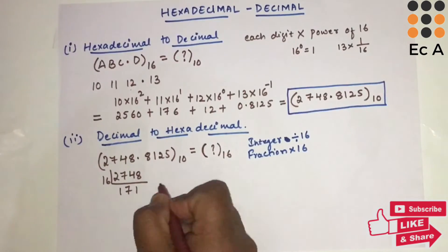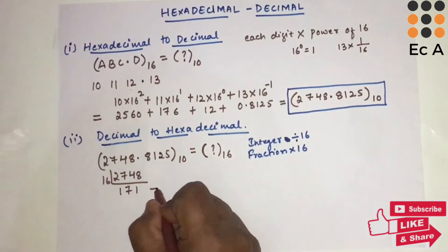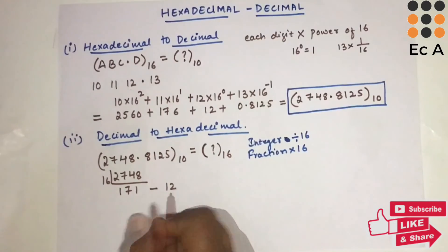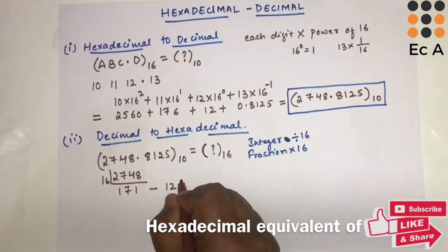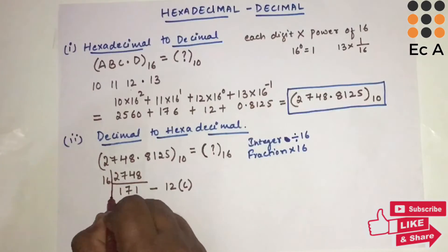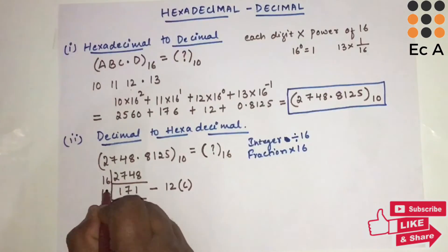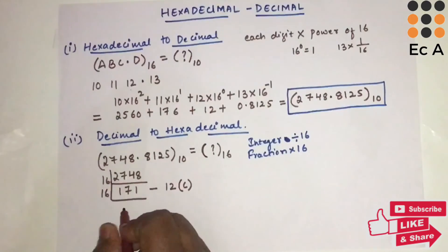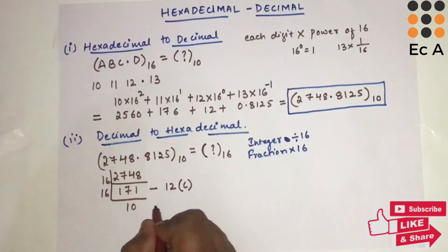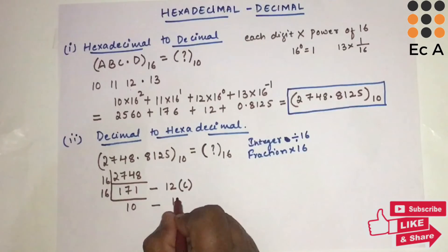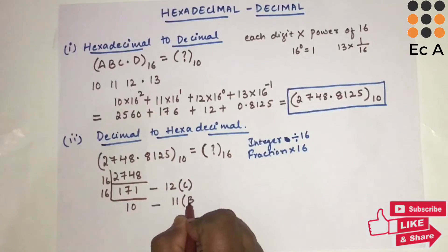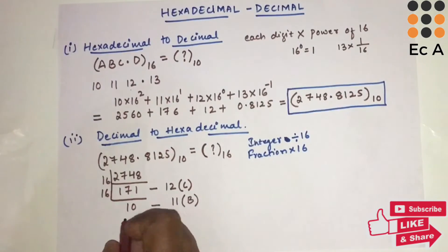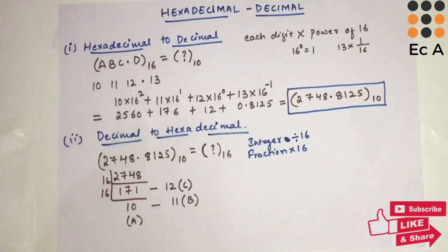Dividing 2748 by 16 gives 171 with remainder 12. The hexadecimal equivalent of 12 is C. Dividing 171 by 16 gives 10 with remainder 11. The hexadecimal equivalent of 11 is B, and the hexadecimal equivalent of 10 is A.